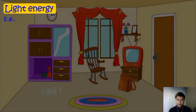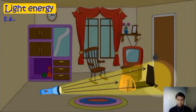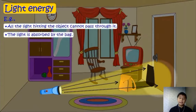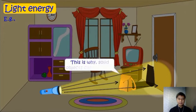Let's have an example. All the light hitting the object cannot pass through it. The light is absorbed by the bag. You can see now, this is why solid objects cast shadows.